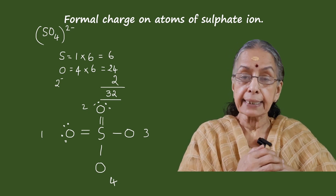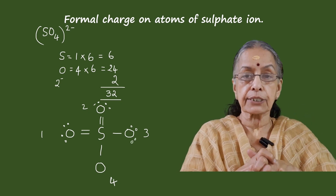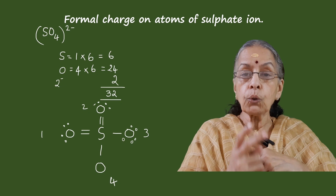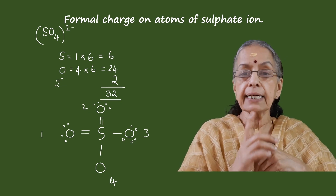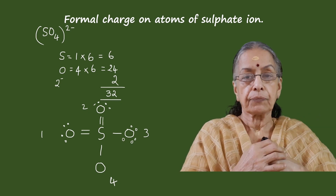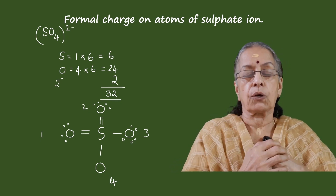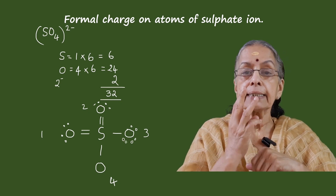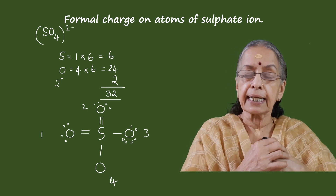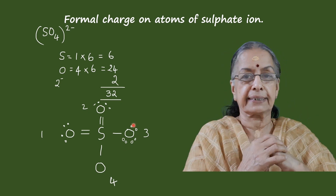Oxygen atom number two now has eight electrons — octet is completed. When we come to oxygen atom number three, it has five remaining electrons in its shell and two electrons in the bond, so it also has only seven electrons. We can show two lone pairs and one single electron, but a single electron cannot remain as such. So it uses one more electron from the extra two charges on the ion. One of those extra electrons is used here to complete the three lone pairs, giving oxygen atom number three a completed octet.